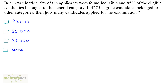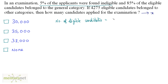In an examination, 5% of the applicants were found ineligible and 85% of the eligible candidates belong to the general category. If 4275 eligible candidates belong to other categories, how many candidates applied for the examination? Let the total number of candidates who applied be x. Since 5% are ineligible, the other 95% are eligible. So the number of eligible candidates equals 95% of x.